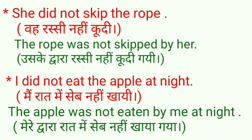यहाँ ध्यान रखना है: जैसे 'the rope' है, तो beginning भी 'the rope' से होनी चाहिए। अगर 'a rope' होता तो 'a rope' होता। मतलब अगर कोई भी article या adjective लगा हो, उसको miss नहीं करना है — exactly वही लिखना है जो object में है। जब हम active से passive में change करते हैं, तो meaning बिल्कुल भी नहीं change होना चाहिए।